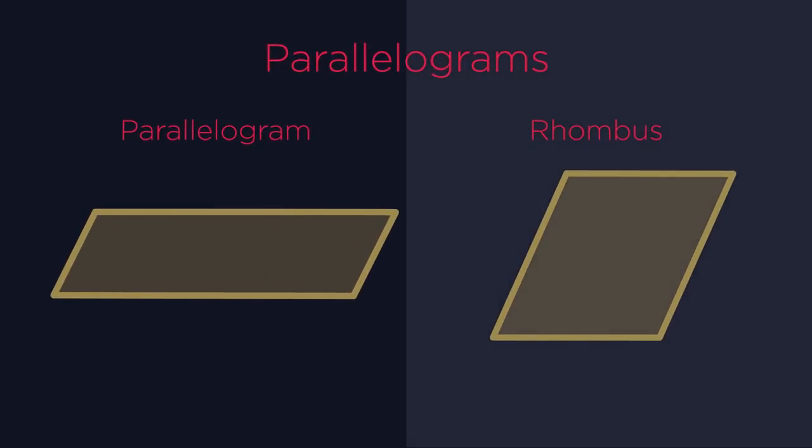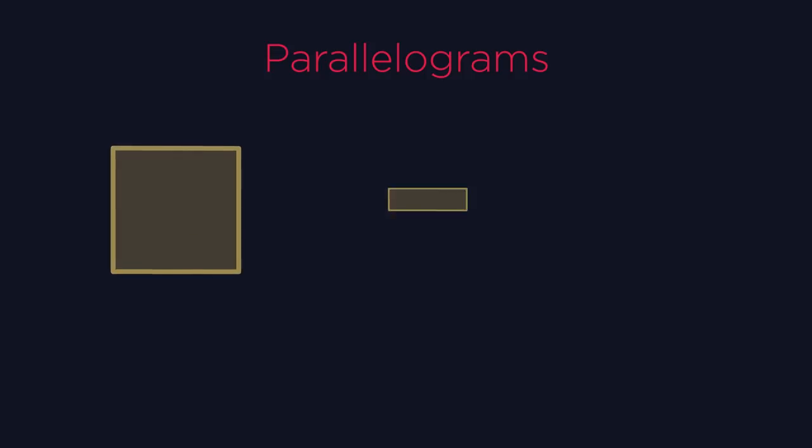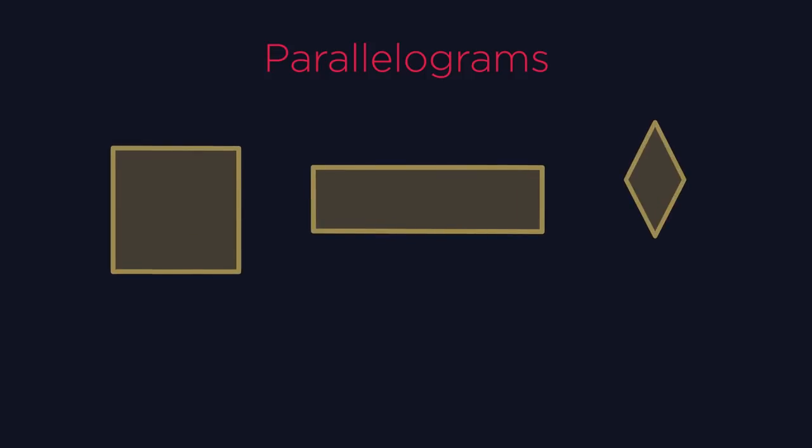So now parallelograms. Just like a rhombus is a tipped over square, a parallelogram is a tipped over rectangle. I told you earlier that squares, rectangles and rhombuses are all types of parallelograms. So what does it mean to be a parallelogram? Pause the video and have a think.